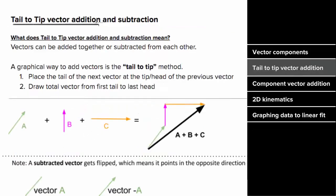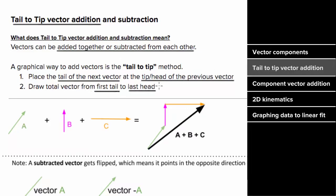What does tail-to-tip or head-to-tail vector addition mean? This is a graphical way to add or subtract vectors from each other. The way it works is by taking the tail of the next vector and placing it at the tip or the head of the previous vector. And once you're done doing this for all your vectors, you draw the total vector from the first tail to the last head. In other words, if you were adding up vectors a, b, and c, I would place the tail of vector b to the head of vector a, and then place the tail of vector c to the head of vector b. And once done, I would draw the total vector going from the first tail to the last head, and that total vector would represent the vector sum of all three vectors.